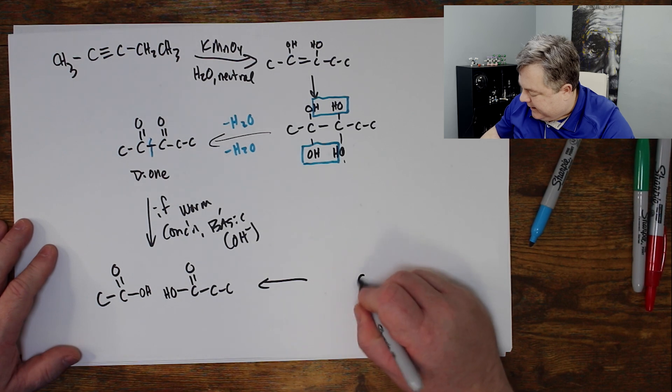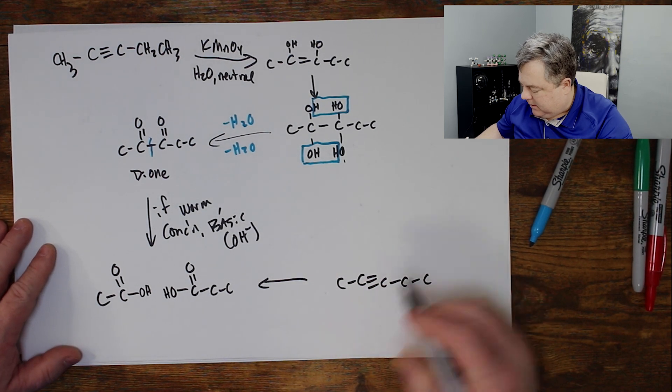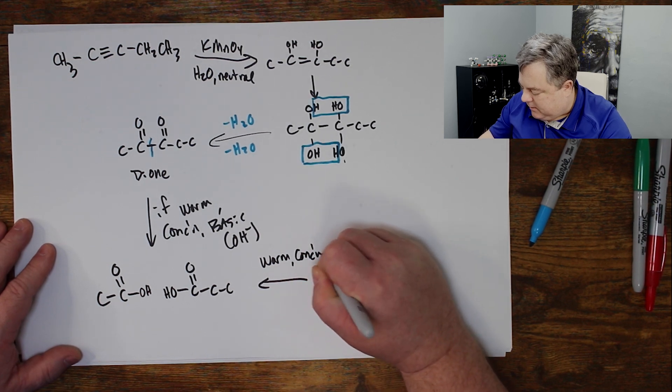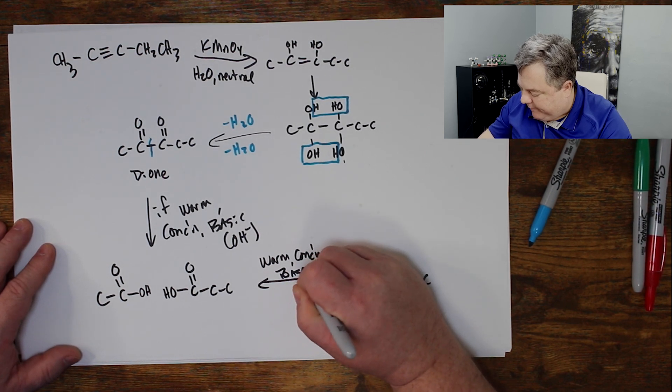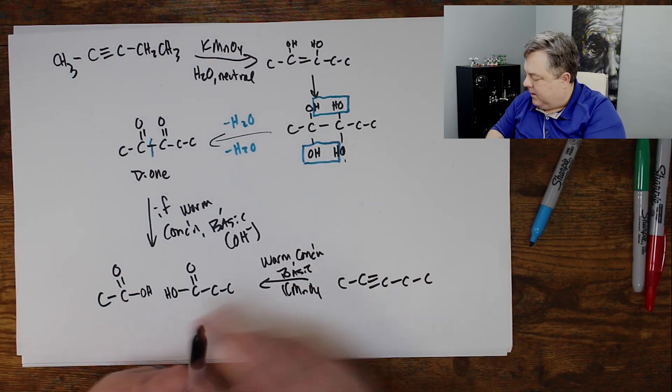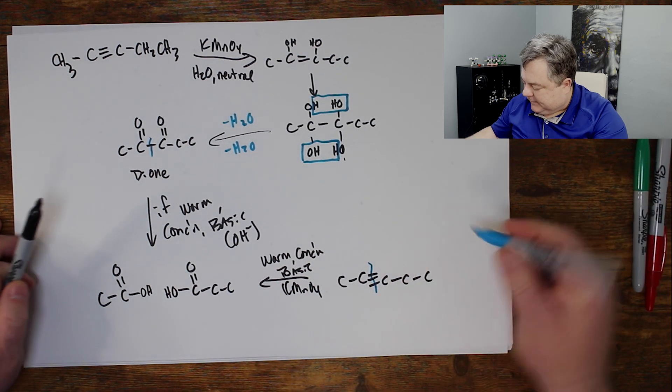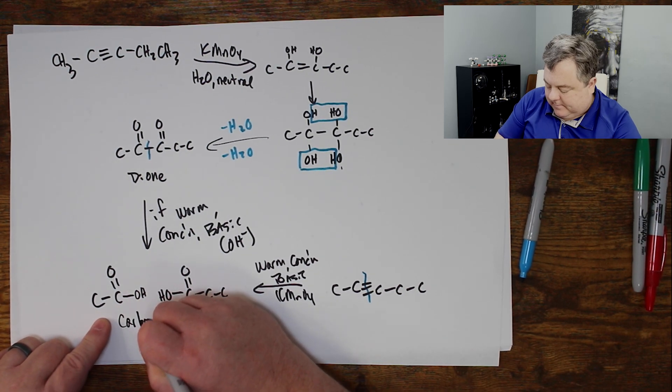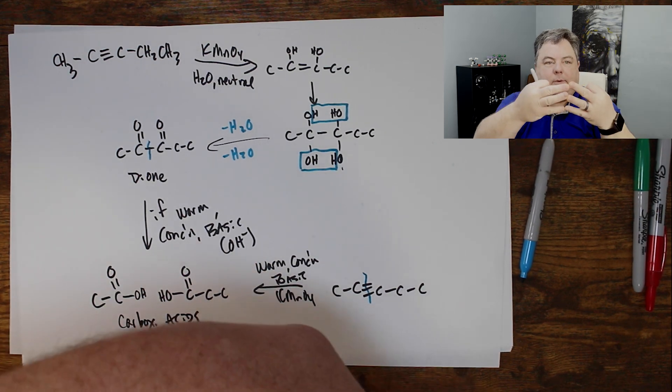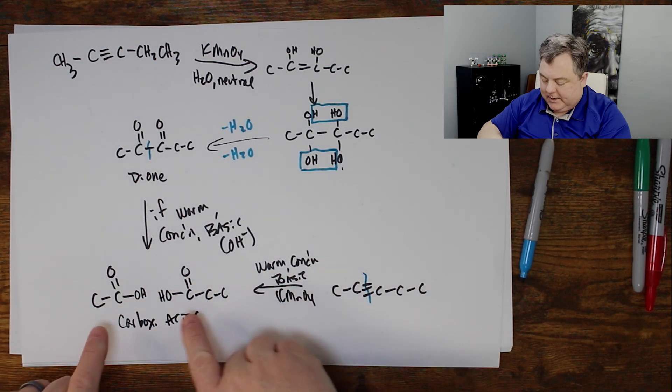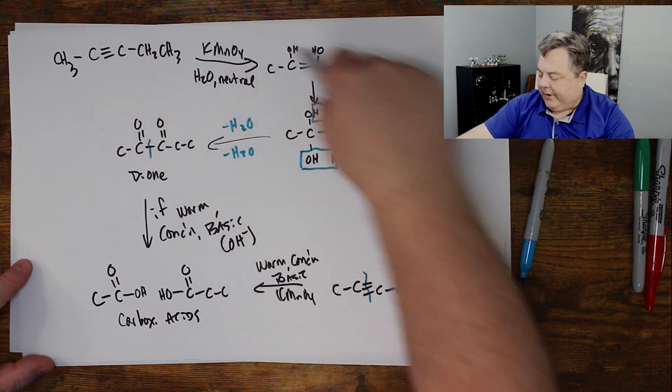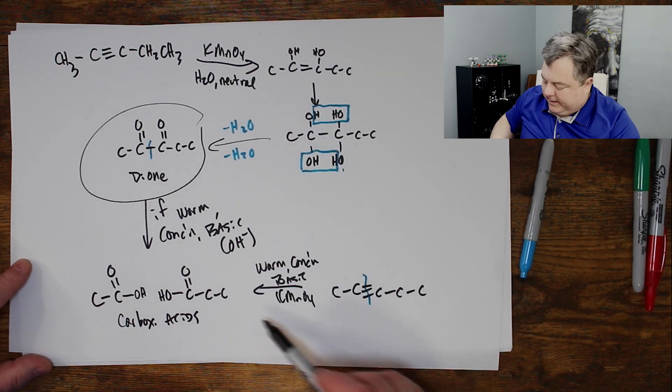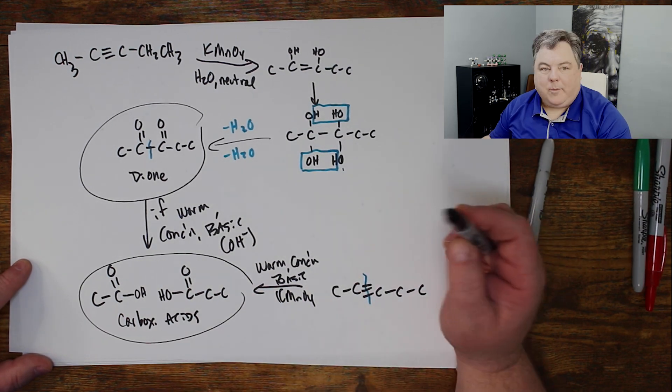So just to kind of look at that, if I have a triple bond, and I have warm, concentrated, basic KMnO4, we chop it, all three bonds. So I need three carbon-oxygen bonds. That makes carboxylic acids. Because when I chop it, I need three carbon-oxygen bonds. That means carboxylic acid. Or you can think about going through the entire mechanism. So I stop here if it's neutral, and I keep going all the way to here if it's warm, concentrated, or basic.